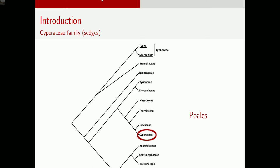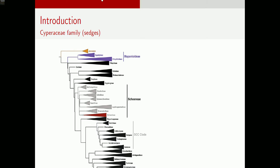We've just had a big publication out in the last couple of months from the Cyperaceae working group presenting a new phylogeny. We break the Cyperaceae up into several different tribes, and the tribe I'm going to talk about today is Tribe Schoeneae. Within Tribe Schoeneae there's been a further classification into eight sub-tribes, and the Schoeninae sub-tribe in red is where I really focus.